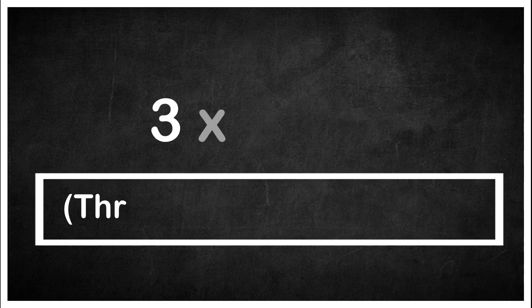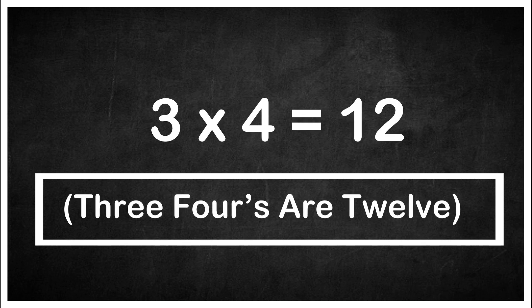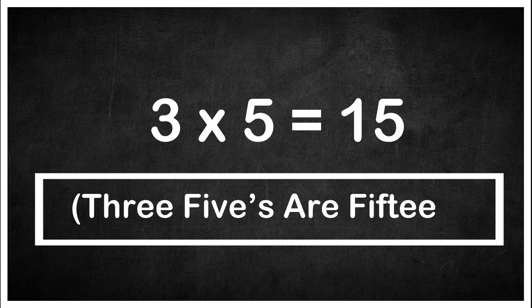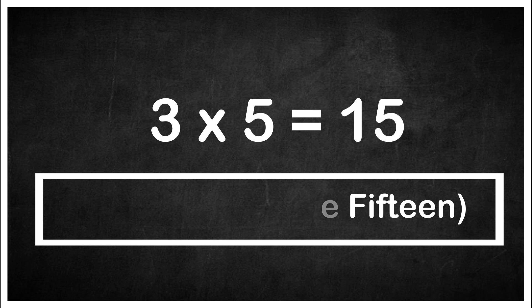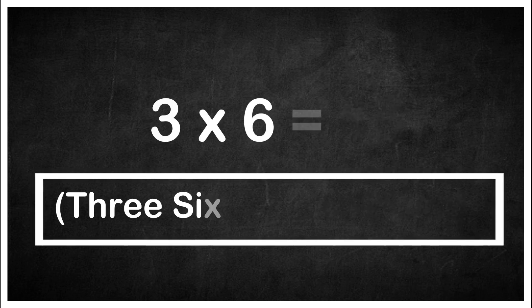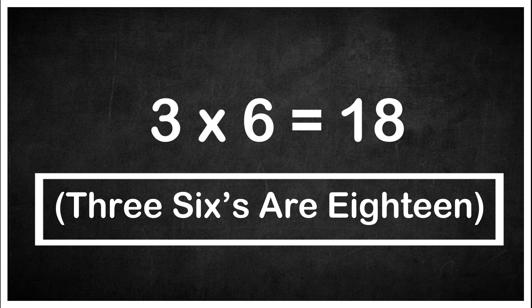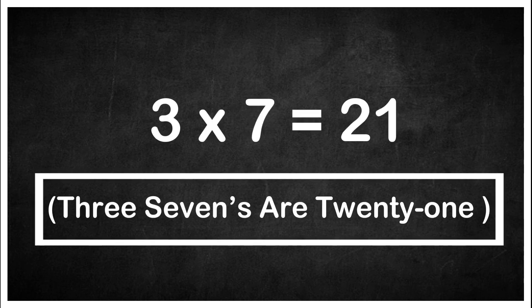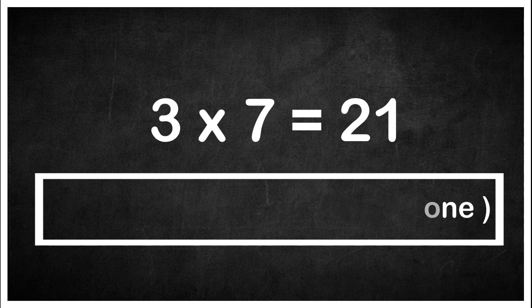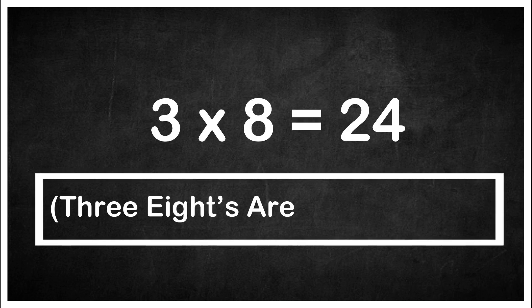Three fours are twelve. Three fives are fifteen. Three sixes are eighteen. Three sevens are twenty-one. Three eights are twenty-four.